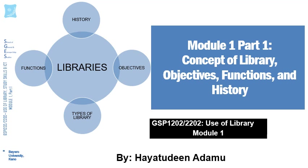Information resources come in two categories. While some are in print form, known as print resources, others are in electronic form, referred to as electronic information resources. Print resources are those which you can feel and touch, and their use doesn't necessarily require an electronic device. Examples include the textbooks you find in the library arranged on shelves, journals, dictionaries, and encyclopedias.